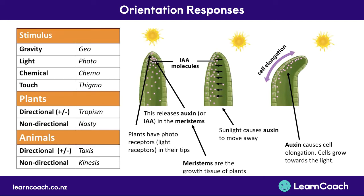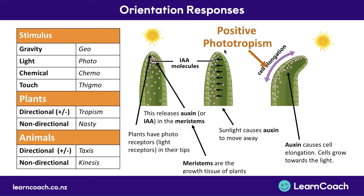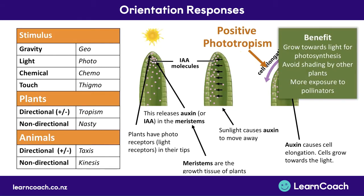The opposite happens in plant roots: germinating roots will grow away from the light if they can. To name this response, the stimulus is light so we use 'photo', and it's a directional response of a plant so it's a tropism — phototropism. Directional responses are always positive or negative. Shoots growing towards the light show positive phototropism. The benefit for shoots is that they can grow upwards towards the light for better photosynthesis, which is how they make all their energy.